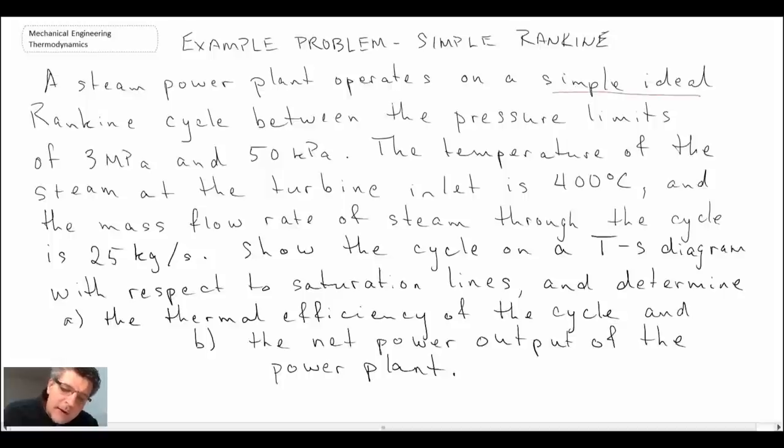We're dealing with a simple ideal Rankine cycle operating between pressure limits of 3 MPa in the boiler and 50 kPa at the condenser. The steam at the turbine inlet is at 400 degrees C, the mass flow rate is 25 kilograms per second. We're asked to show the cycle on a TS diagram, determine the thermal efficiency of the cycle, and finally the net power output.